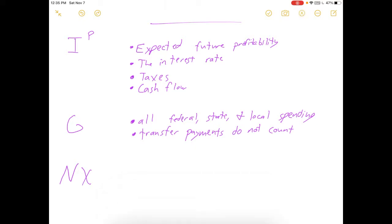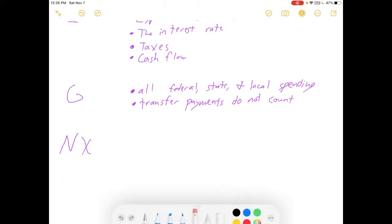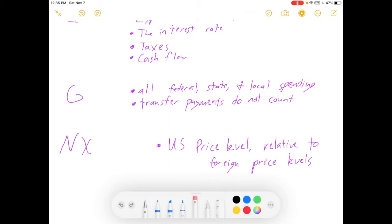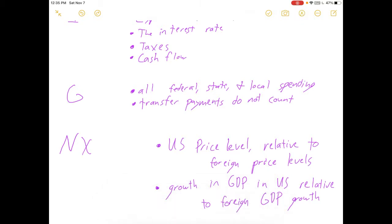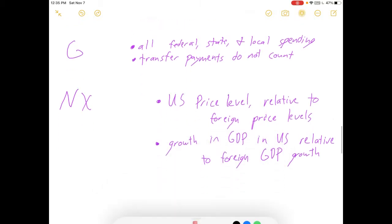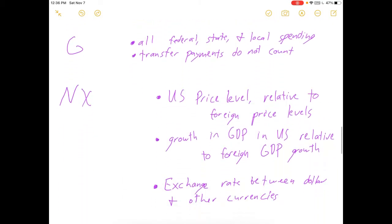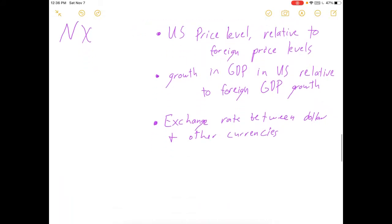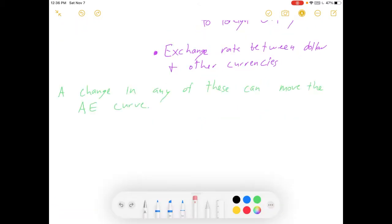Now what about net exports? What can shift that? Well these are all kind of variations on the same thing. It's all about trade of course. But the US price level relative to foreign prices, our growth in GDP relative to foreign GDP growth, and our exchange rate between the dollar and foreign currencies. Yeah there's a lot here and this video is already going to be long enough. So I don't want to get into all of these. But changes in any of these can move the aggregate expenditures line.